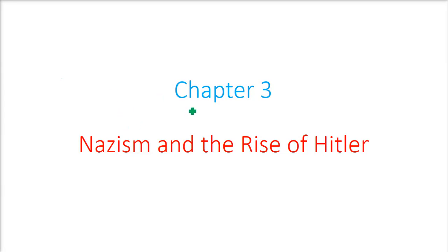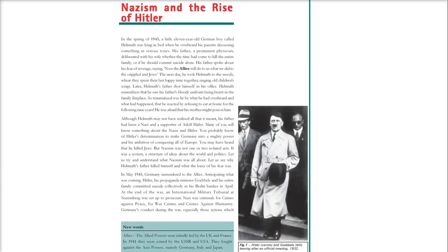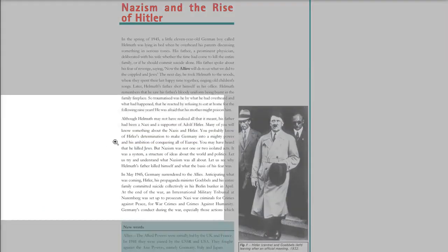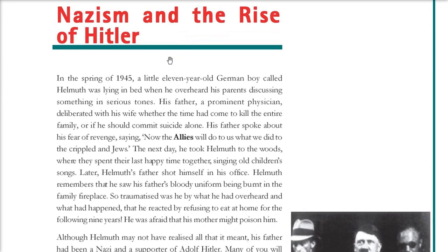This is Chapter 3: Nazism and the Rise of Hitler. We will talk about what Nazism is and how Hitler rose to power. We will start with a small story and then go into detail with the backdrop of this story. You will soon come to know who Hitler was, how Nazism came into effect, and how it affected that part of the world and the world as a whole.